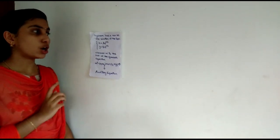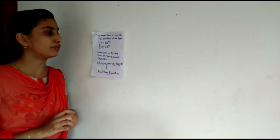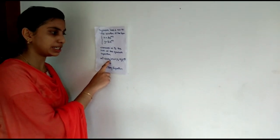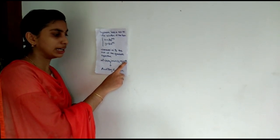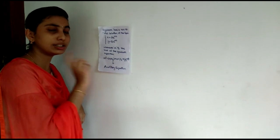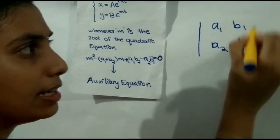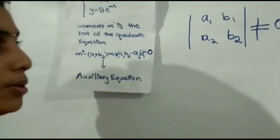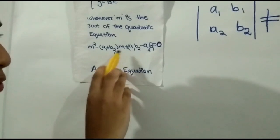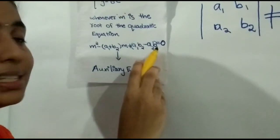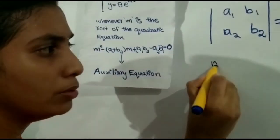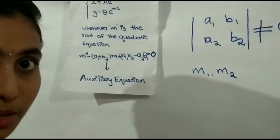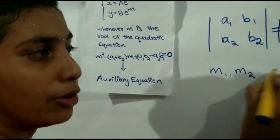We know that the system has a non-trivial solution of the form x = ae^(mt), y = be^(mt), whenever m is a root of the quadratic auxiliary equation: m² − (a1 + b2)m + (a1b2 − a2b1) = 0.